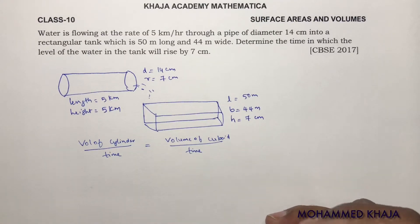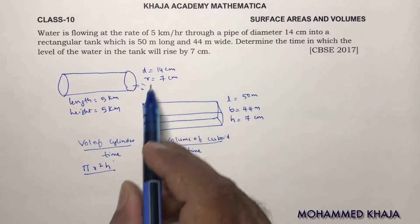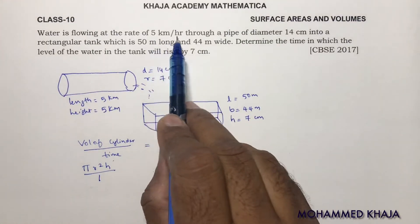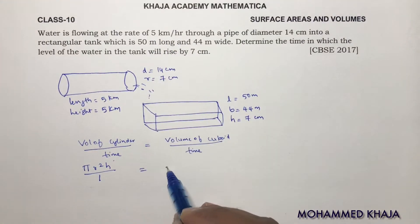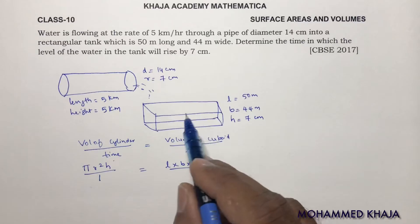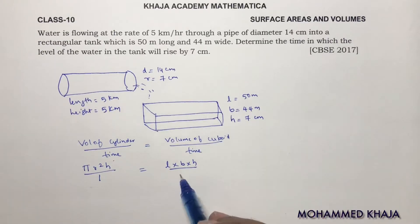If you do directly you will get the answer. Now volume of cylinder formula is pi r squared h by time. Time I will take 1 hour because 5 km per hour. Here volume of cuboid is l into b into h by we need to find the time. In the time, how much time will it take to fill this water by height of 7 cm. So here I need to find x. It is very clear that I need to find the value of x.